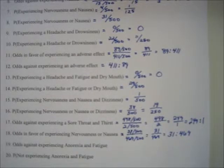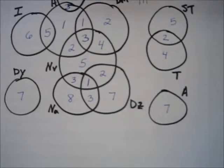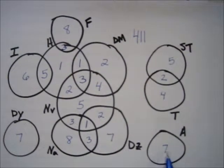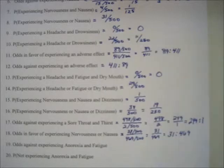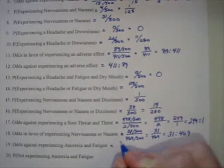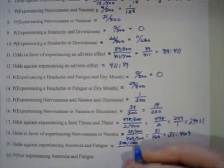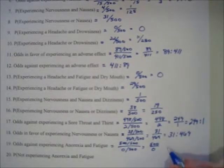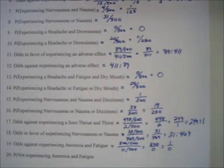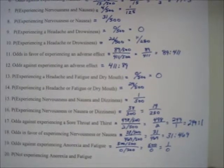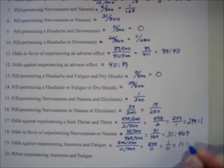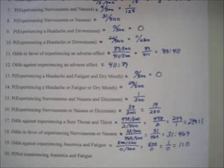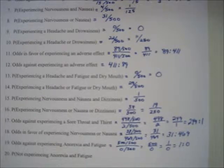Problem 19: odds against experiencing anorexia and fatigue. Here's anorexia, here's fatigue — nobody experienced both. Since it's odds against, failure is 500 out of 500, and success is 0 out of 500, which becomes 500 over 0, or 1 over 0 — undefined mathematically. But as an odds statement, we call it 1 to 0, meaning it won't happen based on current data.